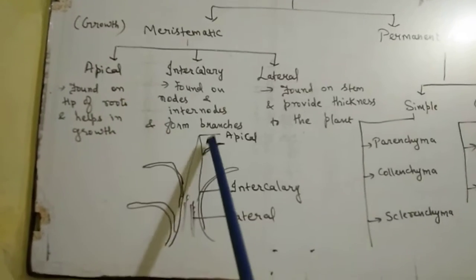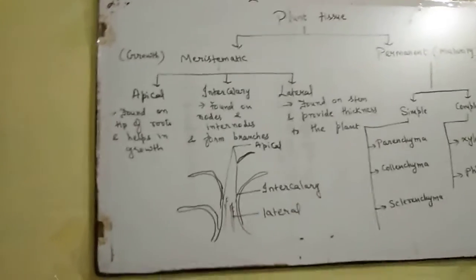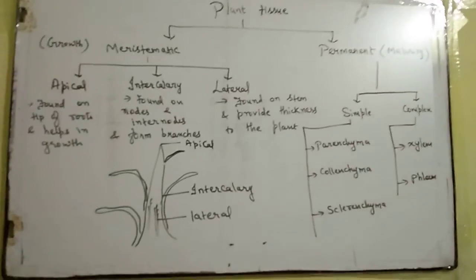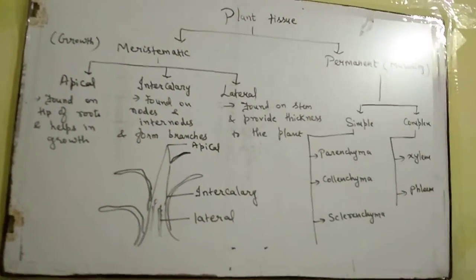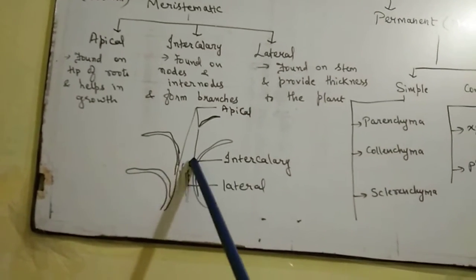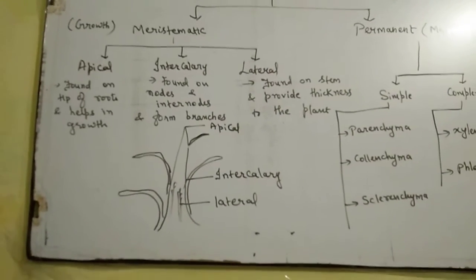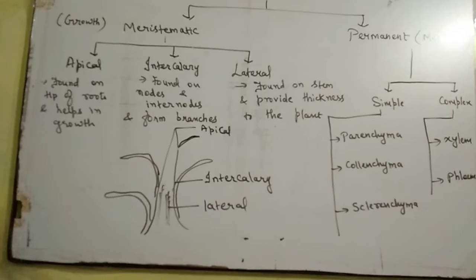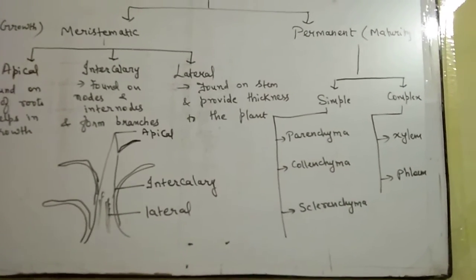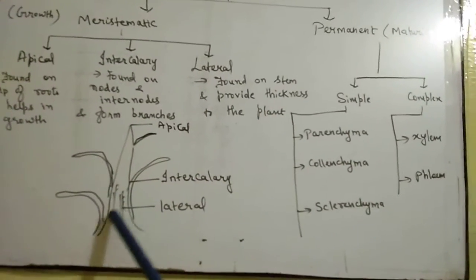Apical meristematic tissue is present at the tips of the plant — roots and shoots — and is responsible for the growth of the plant. Intercalary meristematic tissue is present in the nodes and internodes and helps in the formation of branches. Lateral meristematic tissue is found on the stem and provides thickness to the plant.